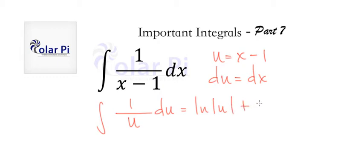And so substituting back what we'd said was u, x minus 1, we find that our final answer is the natural log of the absolute value of x minus 1 plus some constant c.